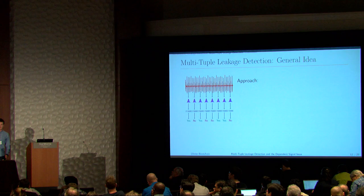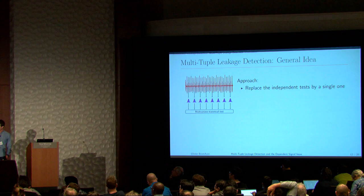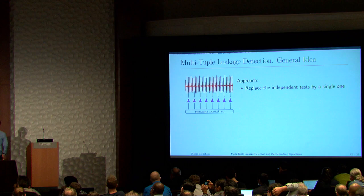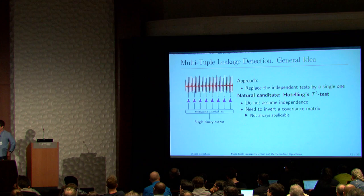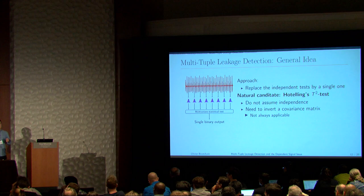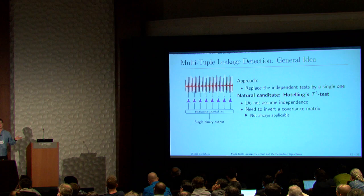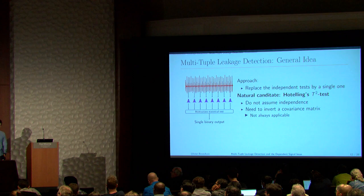Our approach replaces all the independent T-tests with a single multivariate statistical test. If you open a textbook on statistics, you'd use the Hotelling T-square test — a natural extension of the Welch T-test to multivariate settings. It does not assume independence of samples across time, so the analysis is not based on potentially tricky hypotheses. The counterpart is that you must compute and invert a covariance matrix, which is hard for very long traces.